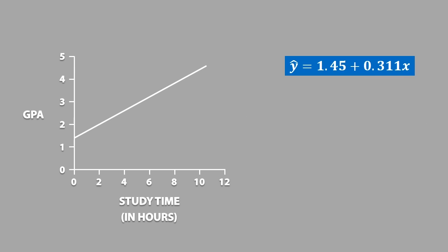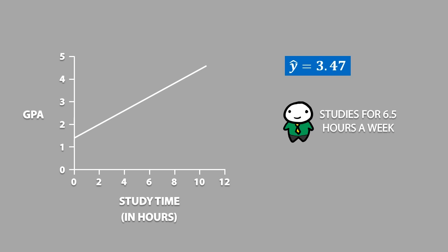We can actually use this equation to predict a value of y using any value of x. For example, based on this data, if we have a student who studies for 6.5 hours a week, we can predict this student's GPA. All we do is plug the value 6.5 into the formula, and we get a y-hat of 3.47. This means that for someone who studies for 6.5 hours a week, we predict their GPA to be equal to 3.47.